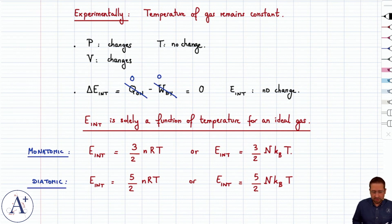Of course, from there you can also find delta E. Delta E internal, in the case of a monatomic ideal gas, would be three halves NR delta T.